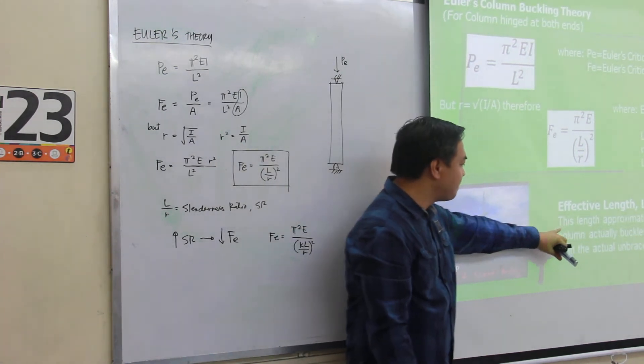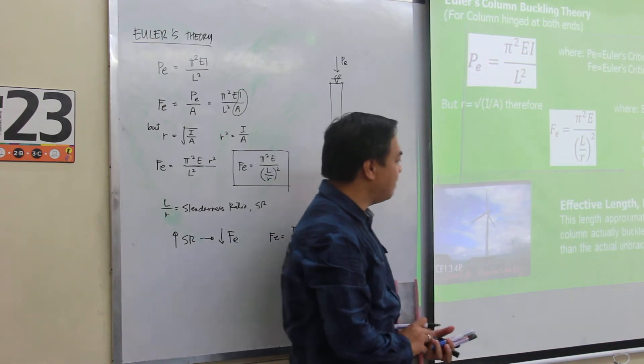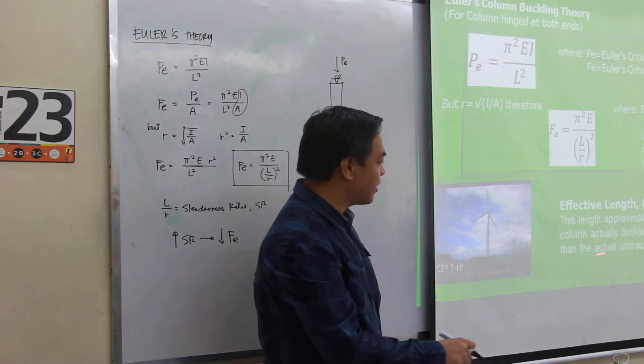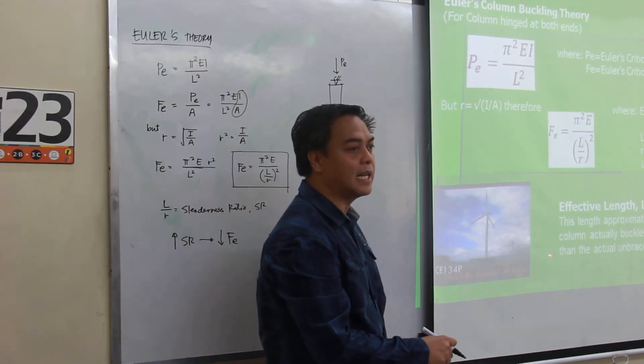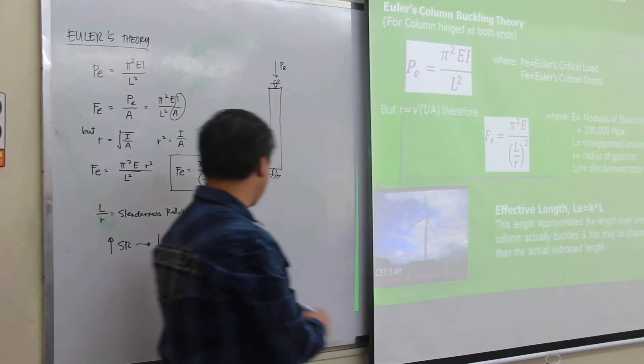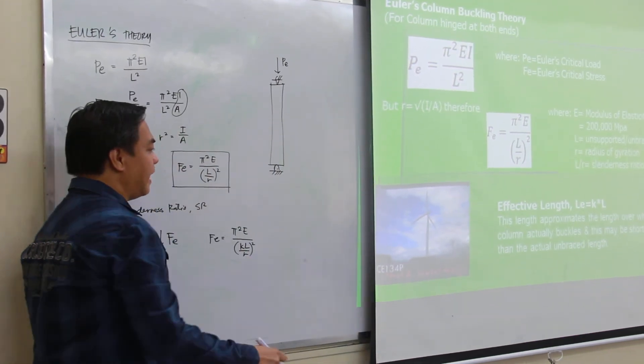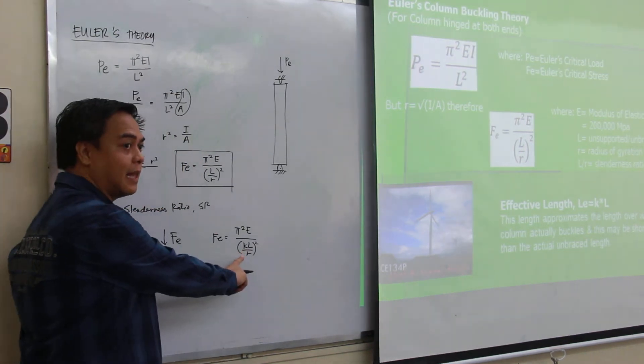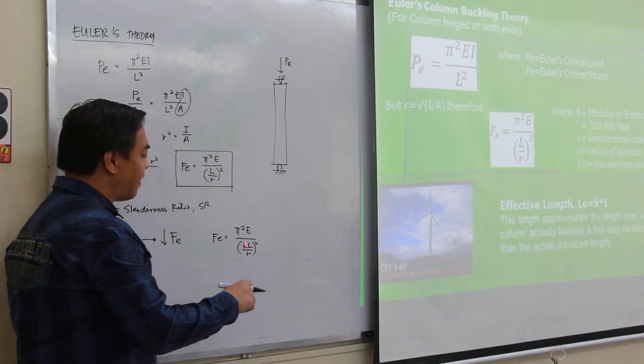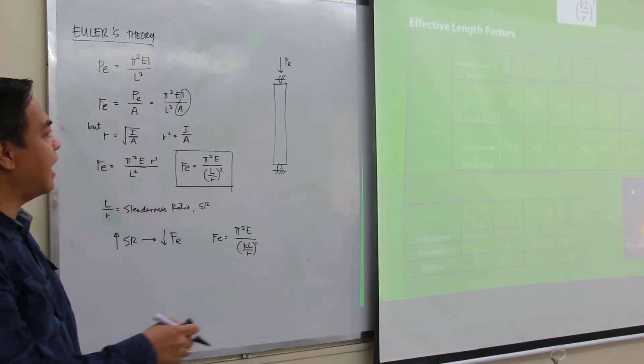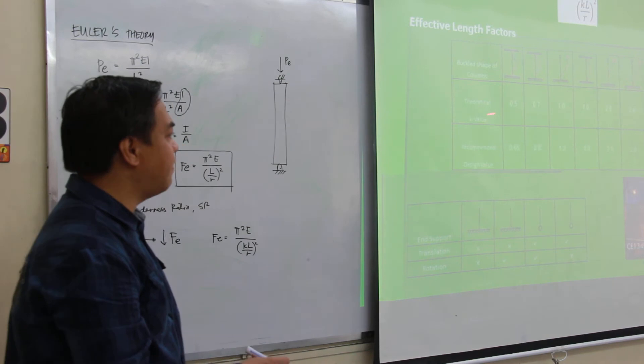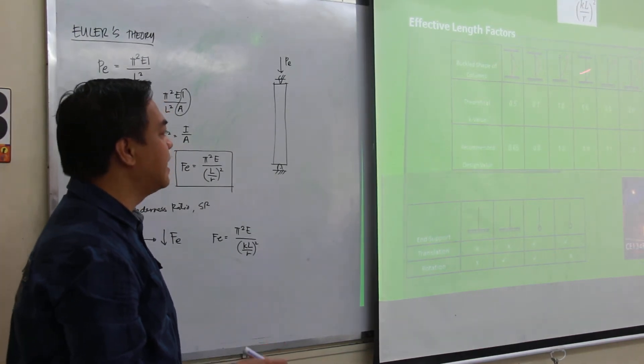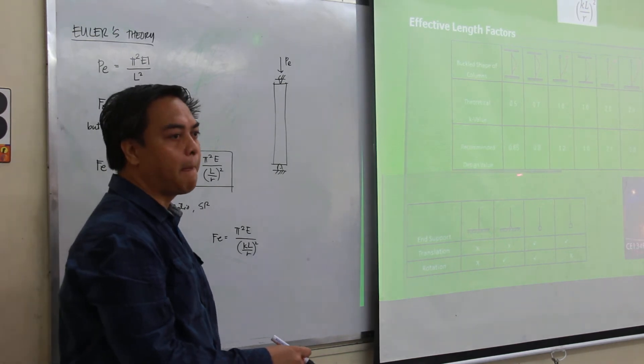What is that effective length? This length approximates the length over which the column actually buckles. And this may be shorter or longer than the actual unbraced length. So it may be greater if K is greater than 1, and it would be smaller or shorter if our K value is less than 1. So the question is, what are the values of K? So I have here that these are the theoretical K values for varying conditions of supports, as well as the recommended design values.